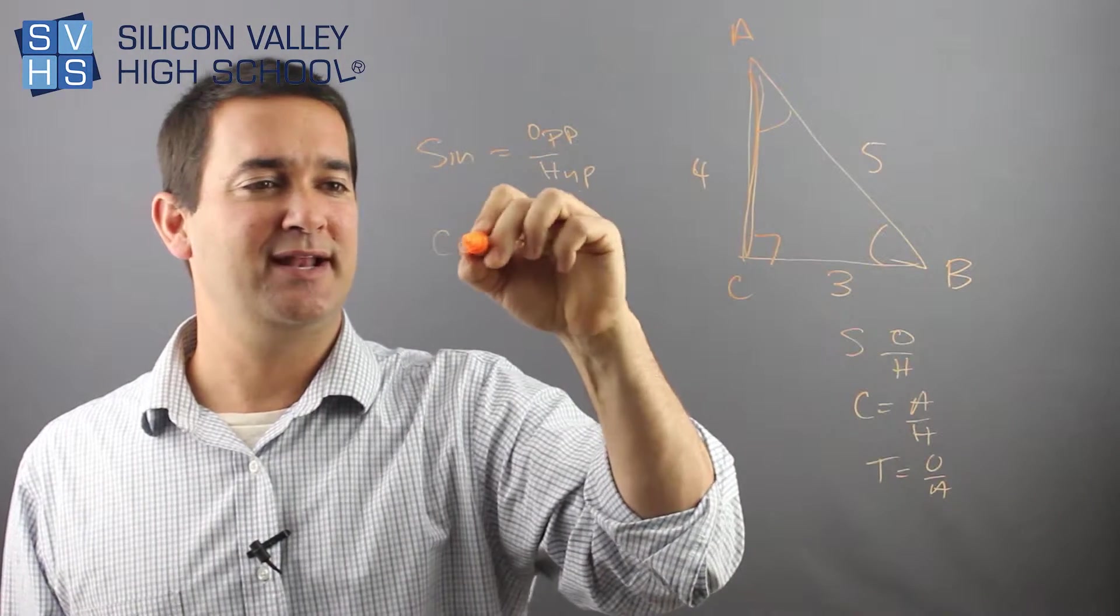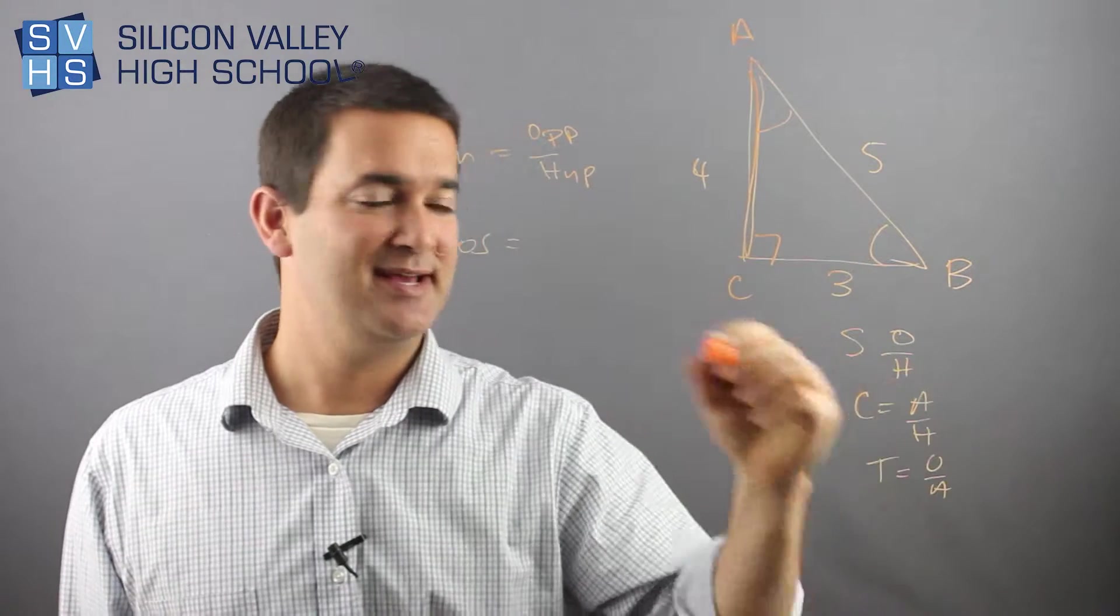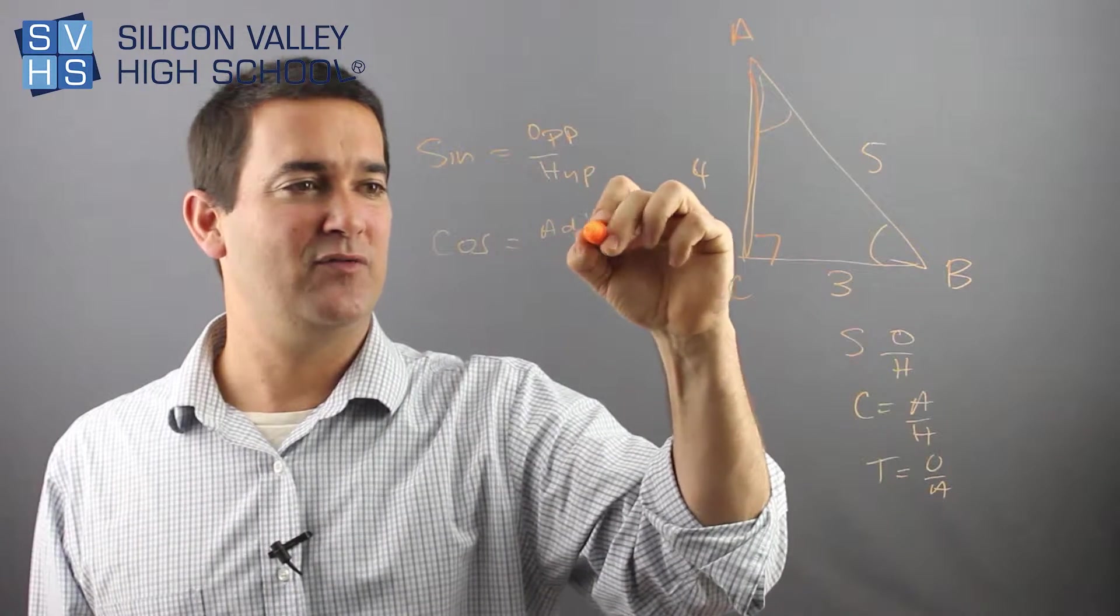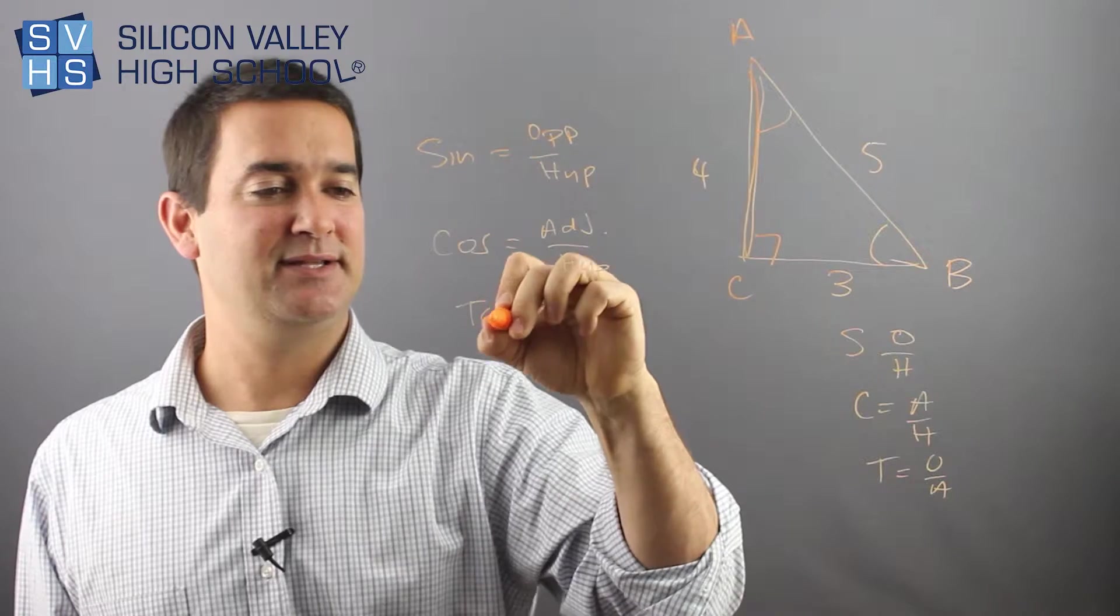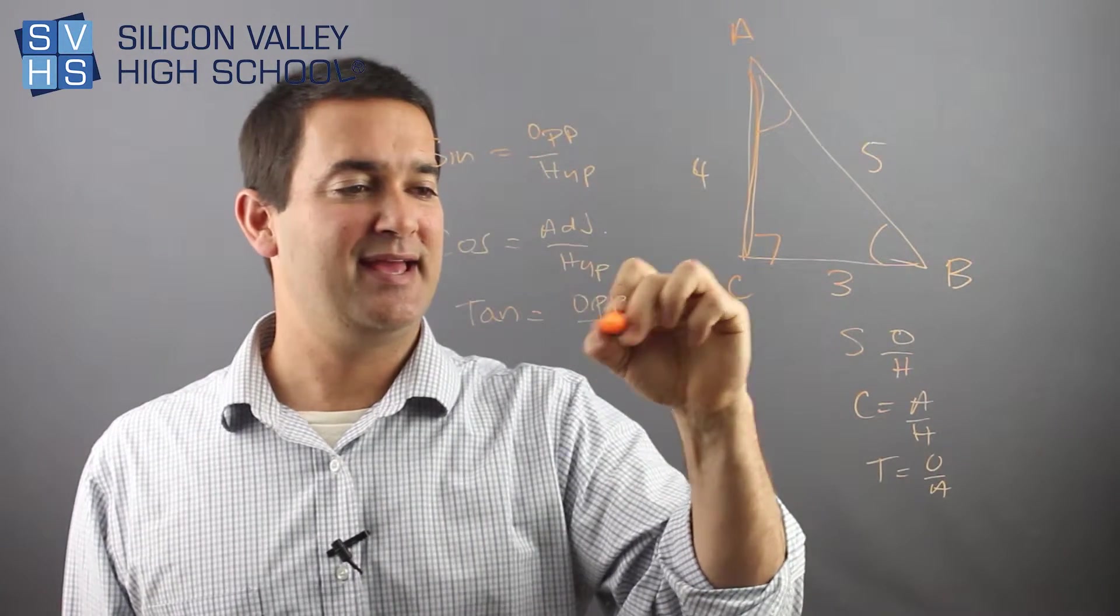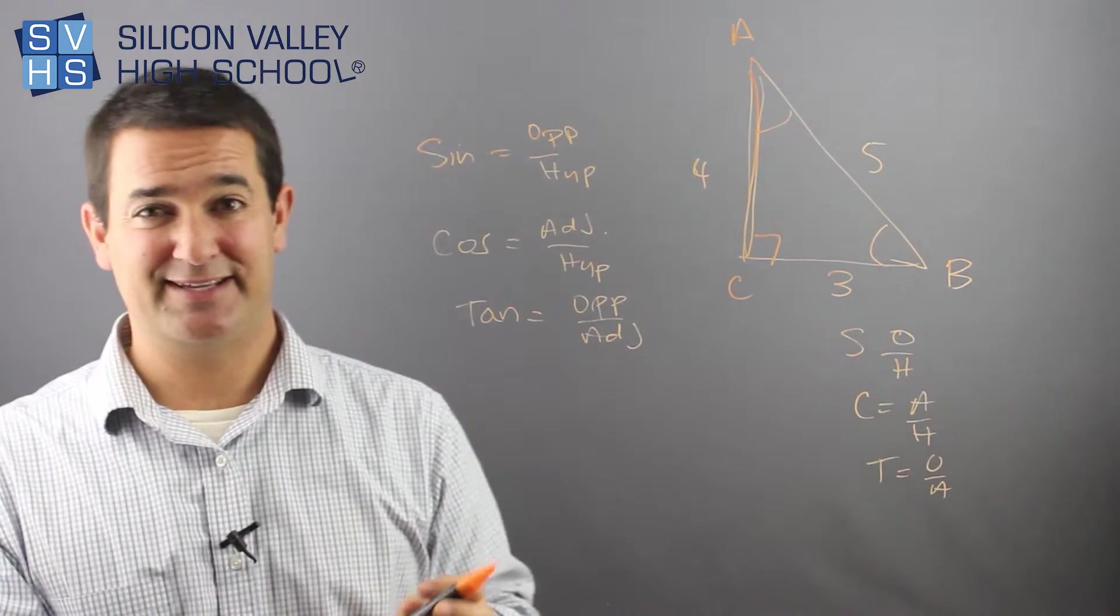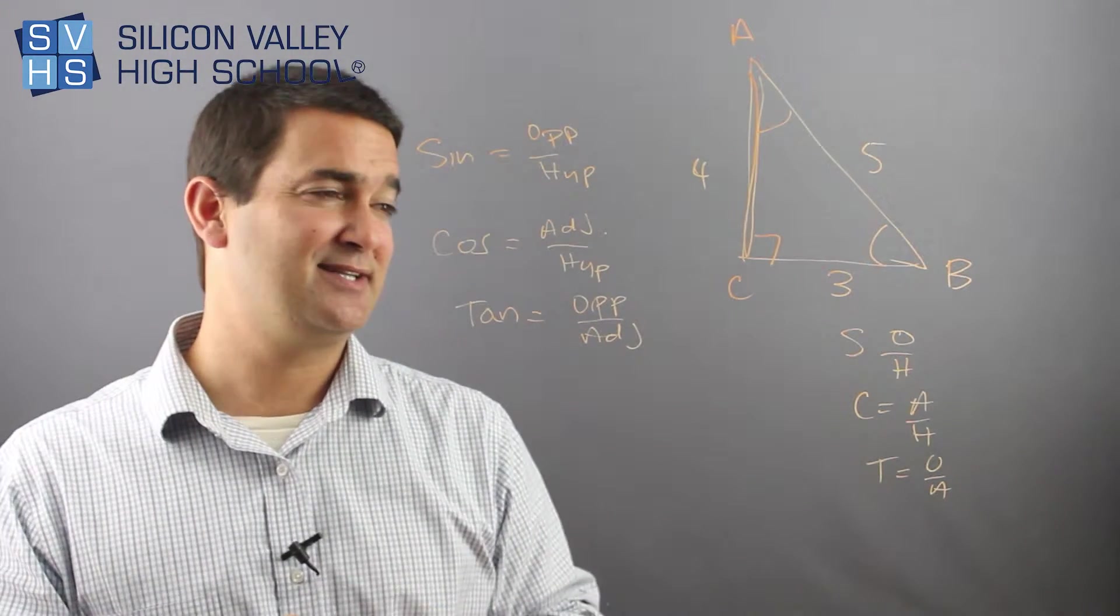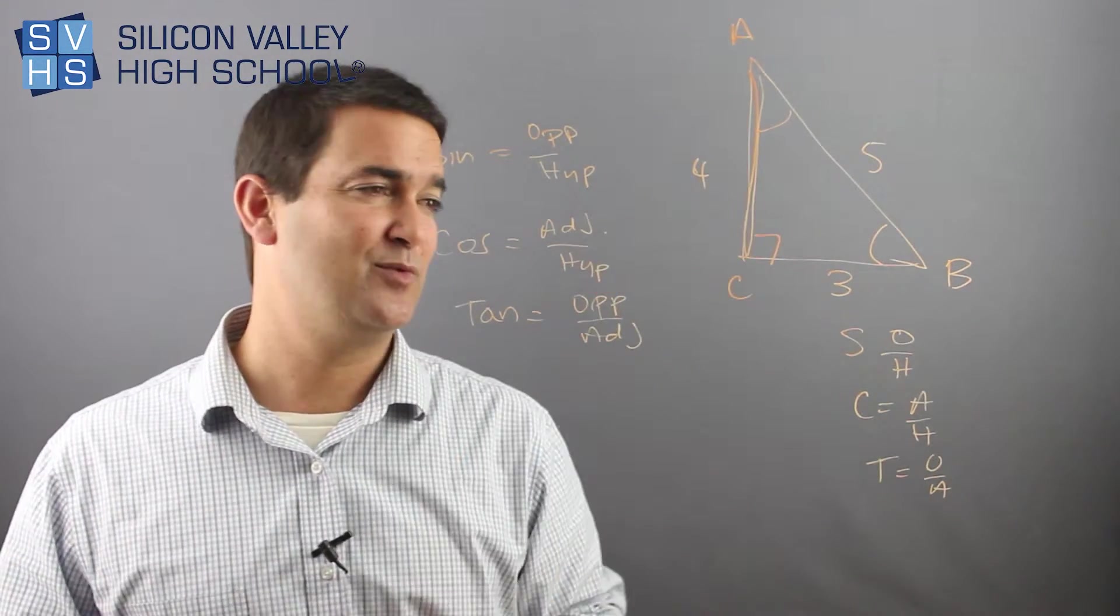And cosine is, the CAH is adjacent over hypotenuse, and tangent, tangent is opposite over adjacent. And again, I realize this is mildly confusing still so far. So let me get, let's start doing some actual problems with this, with this triangle.